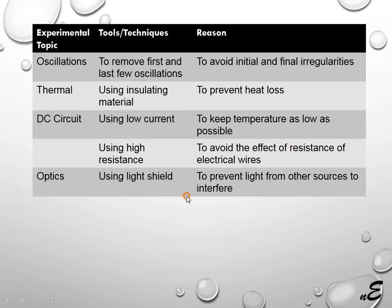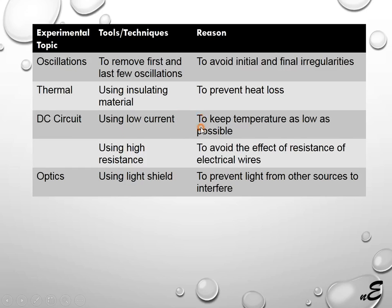In thermal-type experiments, the common practice is to prevent heat loss. To prevent heat loss, we usually use insulating materials, also called lagging materials. In electronic circuit, DC circuit, or electrical experiments, a common good technique is to keep the current low. In that case, resistance change is very low. We know the resistance of conducting wires depends on temperature; at high temperature, metal in conducting wires shows greater resistance. So current should be kept low in electrical circuit experiments.